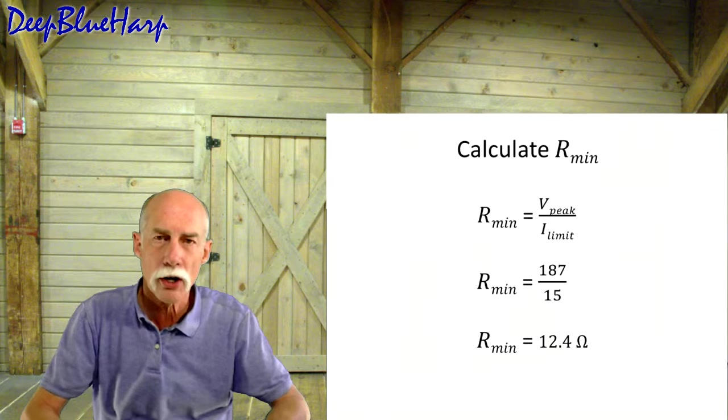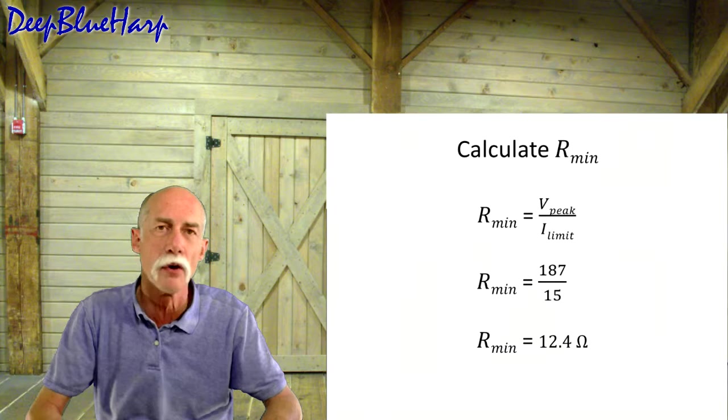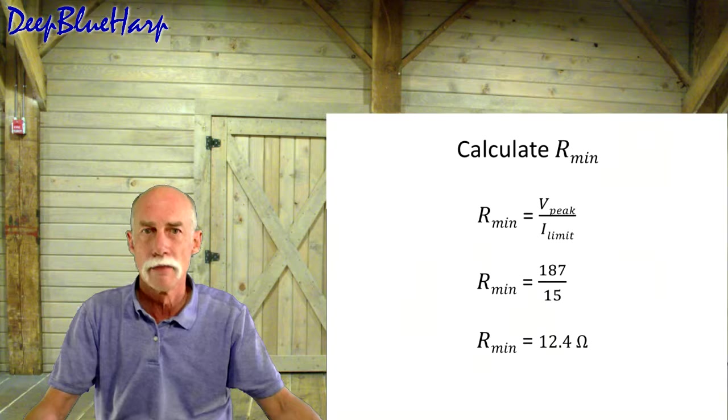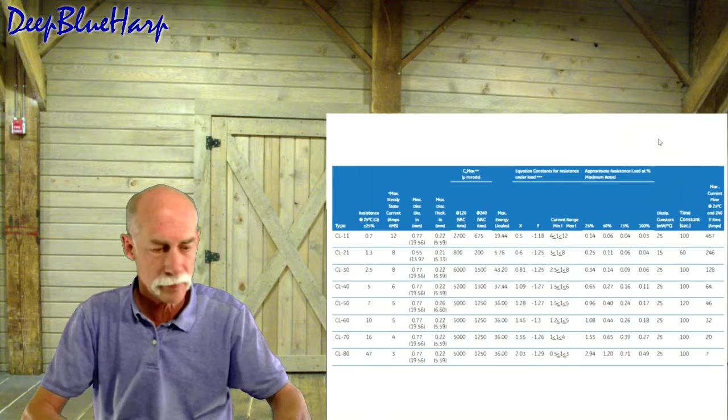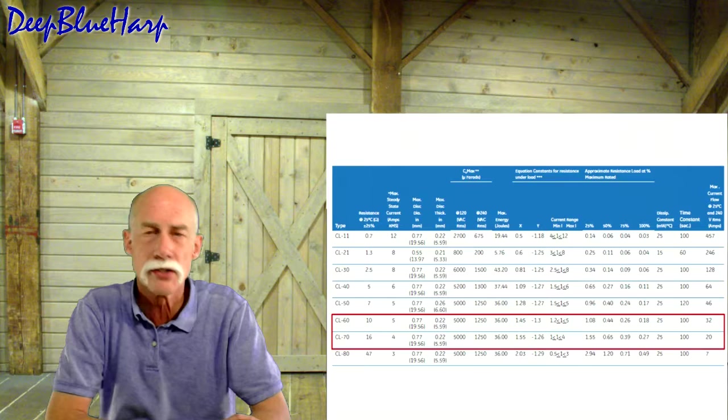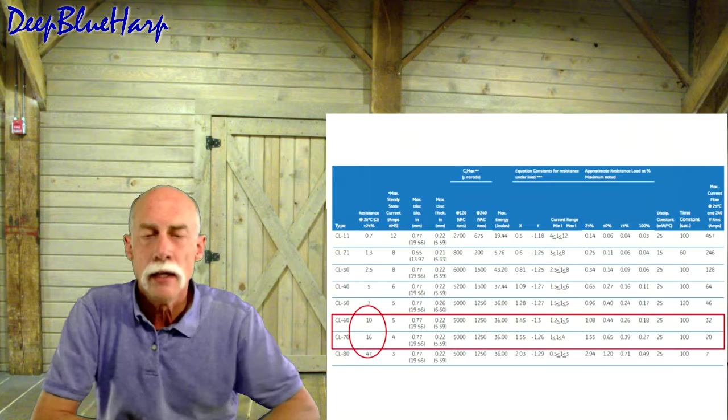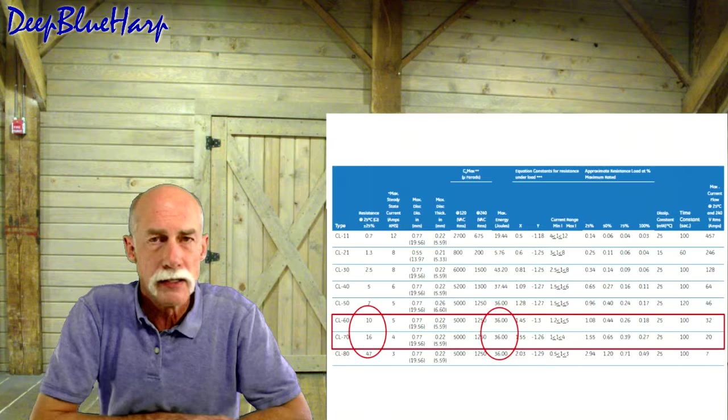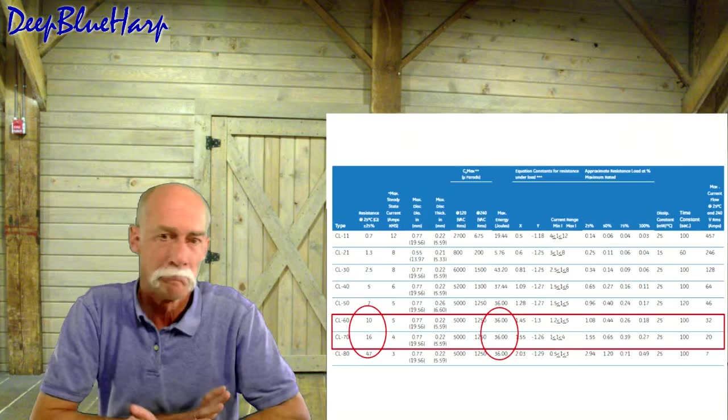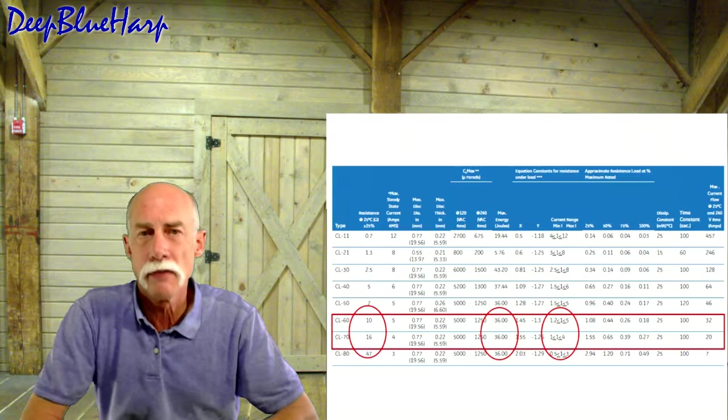What is the minimum resistive value for the thermistor? What is the voltage peak over the current limit? In this case, it's 187 volts divided by 15 amps or 12 ohms. That is the minimum resistive value for the thermistor. So in this case, there are two options available to us. If you just look at ohms, a CL60 is good for 10 ohms. The CL70 is good for 16 ohms. The amount of energy that can be safely dissipated by the CL60 or 70 is 36 joules. We're at 1.7. Perfect. It'll handle it.